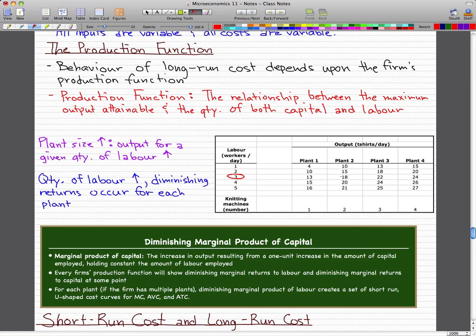Now, the change from plant one to plant two, when we increased one more knitting machine with the same amount of workers, the amount of output we made actually increased by five. When we went from plant two to plant three, the output actually increased only by four. From plant three to plant four, only two.